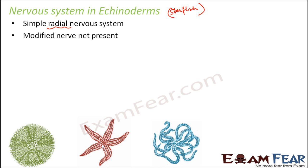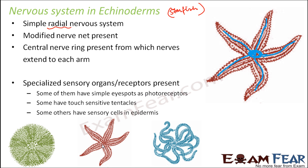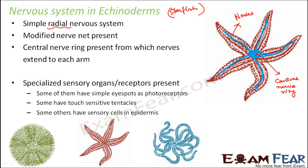A central nerve ring is present from which nerves extend to each arm. You can see this central nerve ring, and from it extend different nerves for each arm — one nerve per arm. Due to this shape of the nervous system, it is known as the radial nervous system.